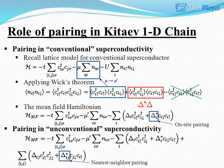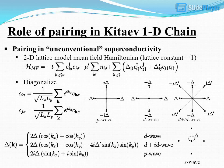Role of pairing in the Kitaev 1D chain. Pairing in conventional superconductivity: recalling the lattice model and applying Wick's theorem yields the mean-field Hamiltonian. For unconventional superconductivity, both on-site and nearest-neighbor pairing are considered. A 2D lattice model with mean-field Hamiltonian and lattice constant equal to 1 is presented.